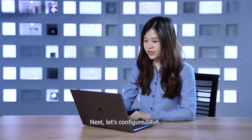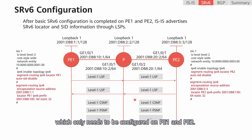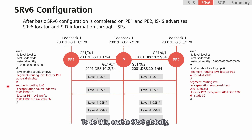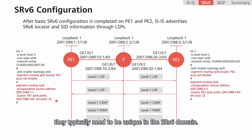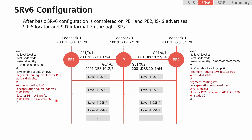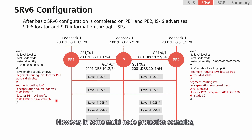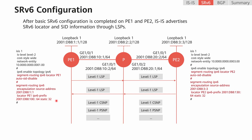Next, let's configure SRV6, which only needs to be configured on PE1 and PE2. To do this, enable SRV6 globally, configure a source address for SRV6 encapsulation, and then configure a locator. Because locators are routable in SRV6, they typically need to be unique in the SRV6 domain. However, in some multi-node protection scenarios, it is acceptable to configure the same locator.